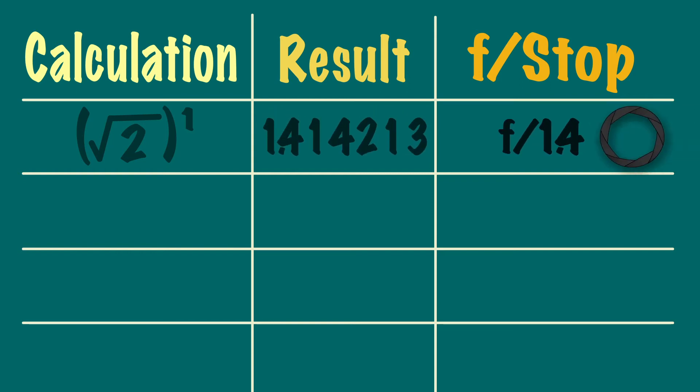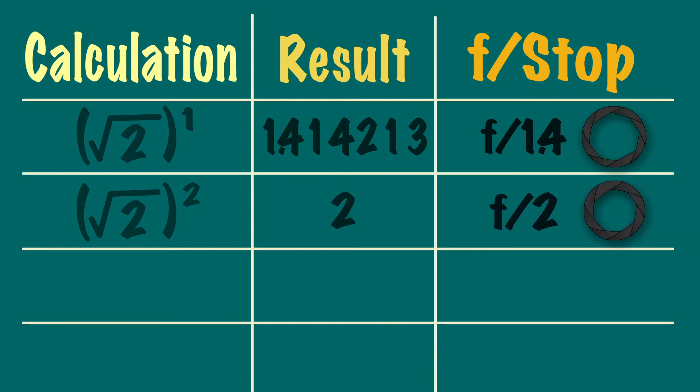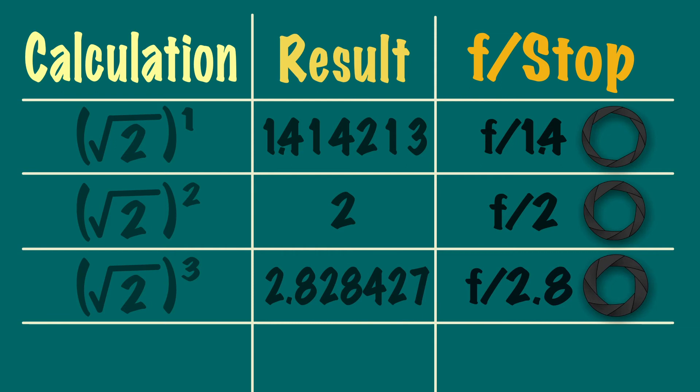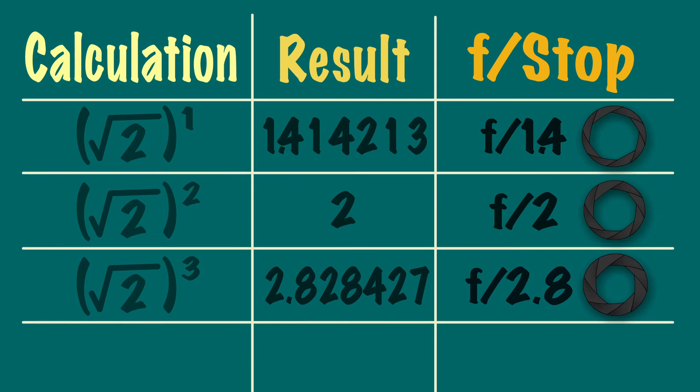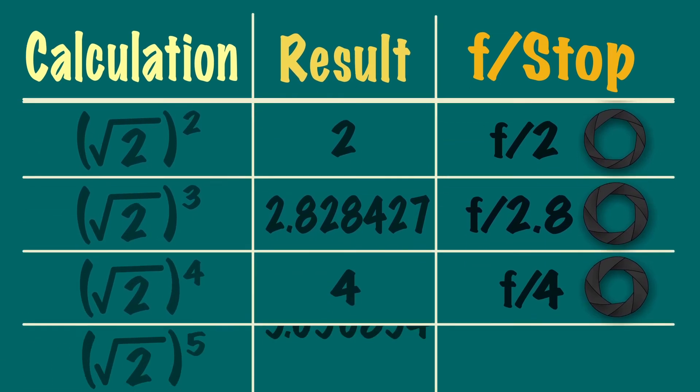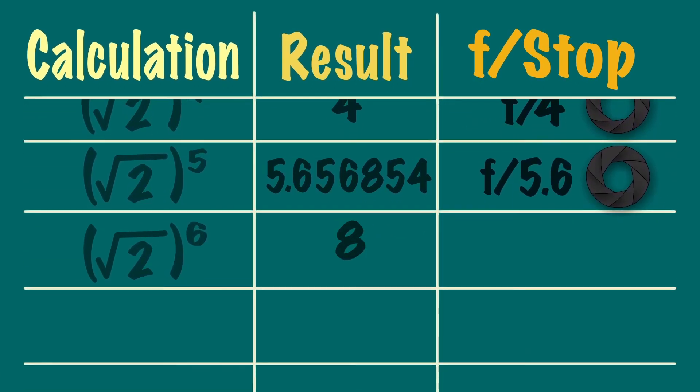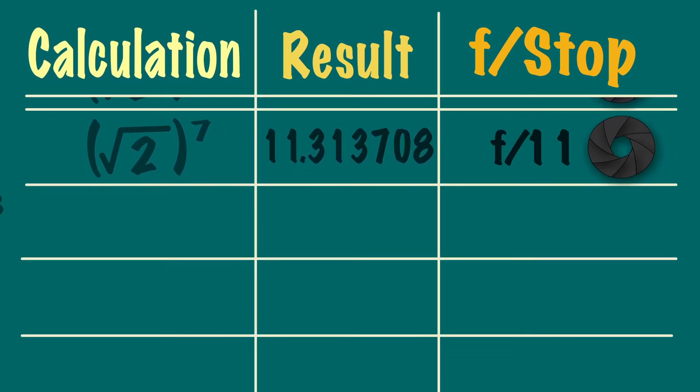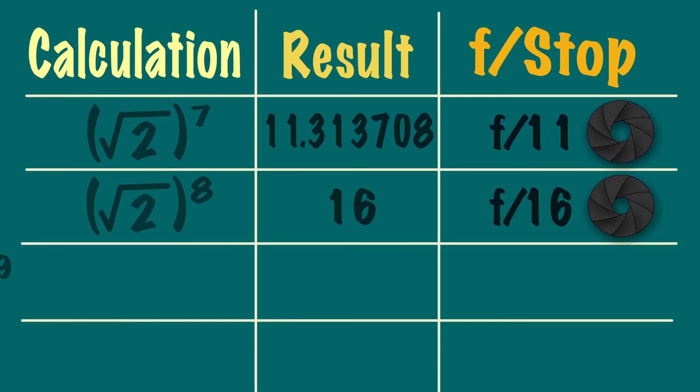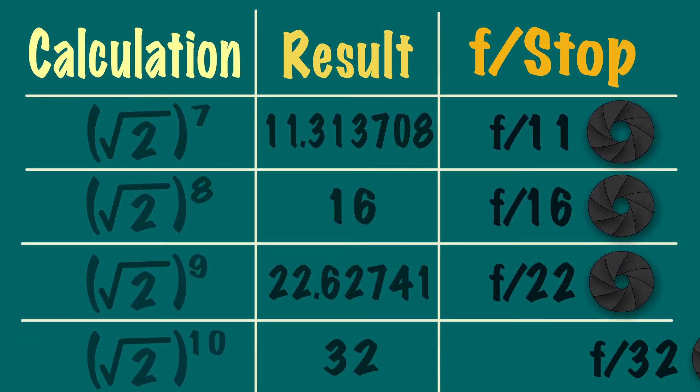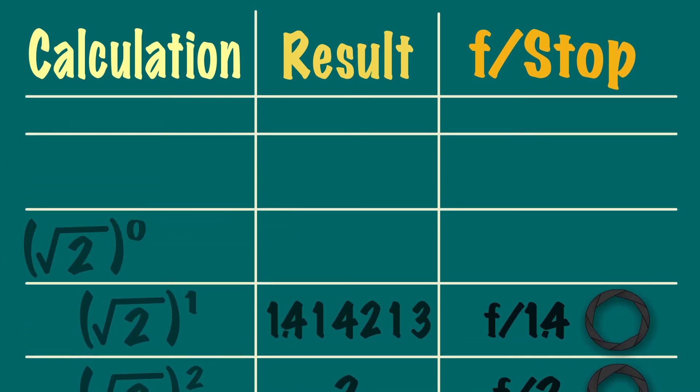This works out to be approximately 1.4. To half the light from here is the square root of 2 to the power of 2. This gives us 2. To half this again is the square root of 2 to the power of 3. This gives us around 2.8. The value of x keeps going up or down depending on which f number you want to calculate. The numbers calculated are approximately the ones labeled on the lens, although the calculations can go higher or even lower.